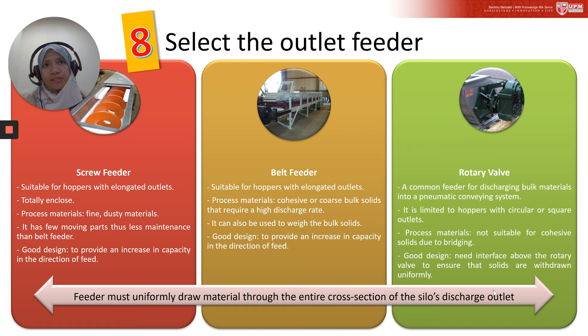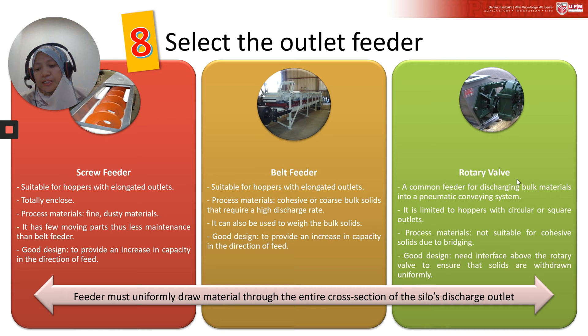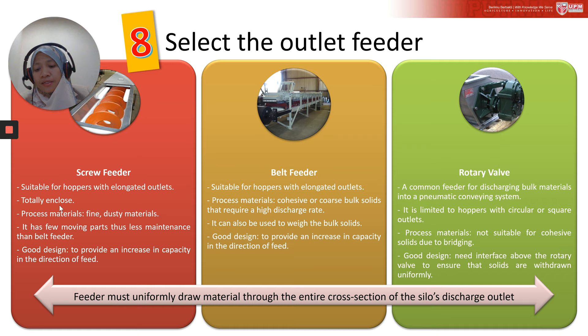Three common types of bulk solid feeders are the screw feeder, belt feeder, and rotary valve, each with different advantages and disadvantages. Screw feeders are well suited for use with hoppers that have elongated outlets, such as transition hoppers and wedge hoppers. Since a screw feeder is totally enclosed, it is good for use with fine and dusty materials and requires less maintenance than a belt feeder due to fewer moving parts.